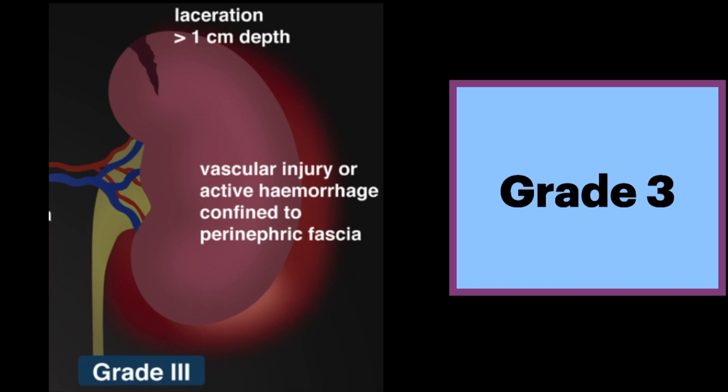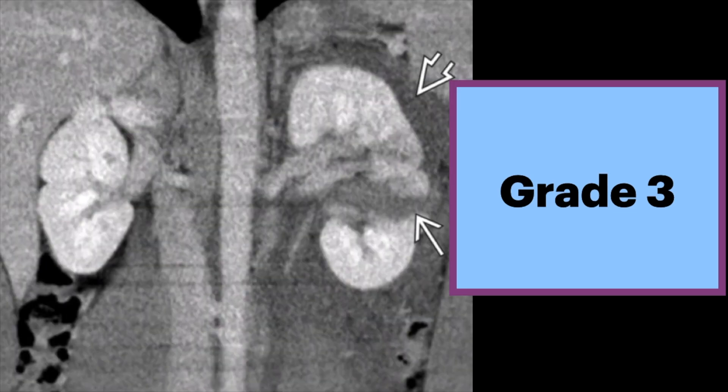A grade 3 injury is a laceration greater than 1 cm in depth. There is no involvement of the collecting system. There may also be a contained vascular injury or active bleeding contained within the perinephric fascia. Coronal CT in this teenage patient shows a grade 3 laceration extending to the renal pelvis with a subcapsular hematoma.